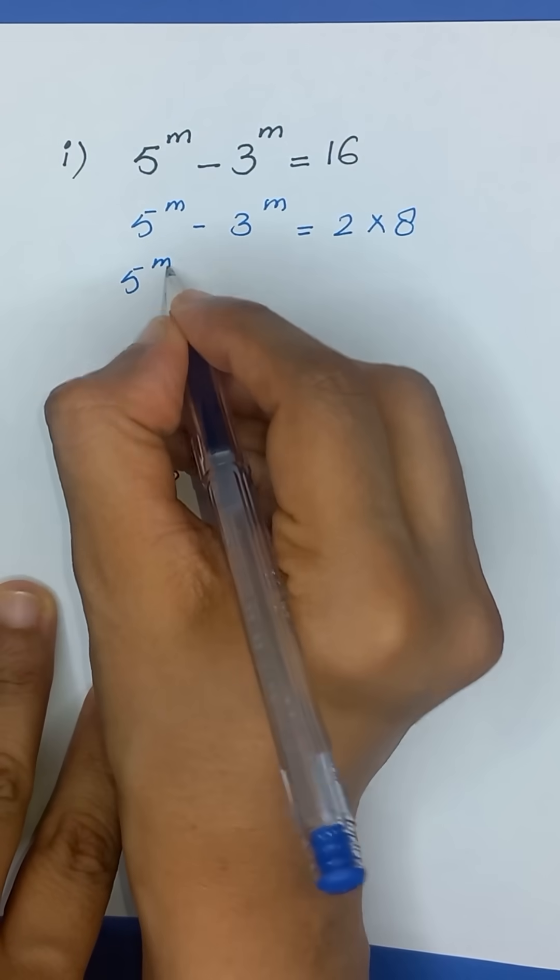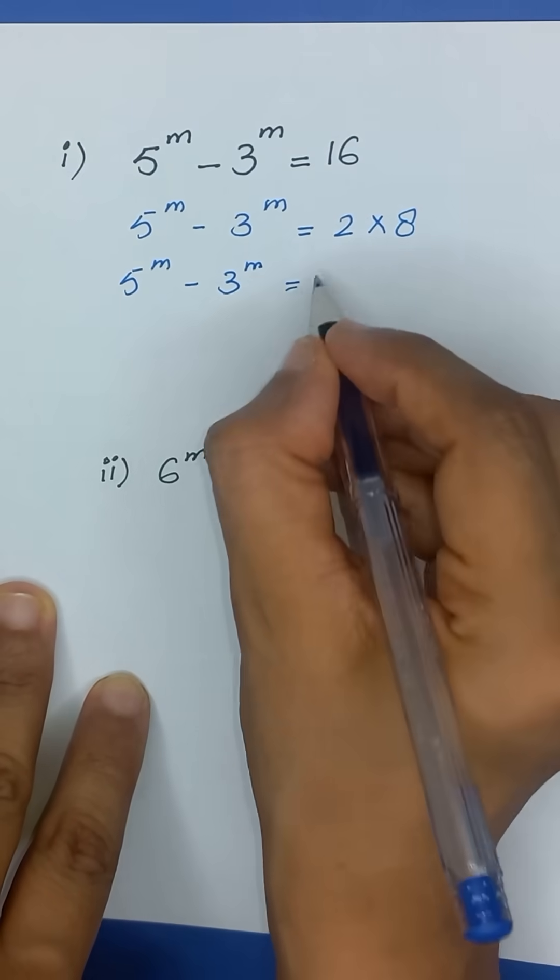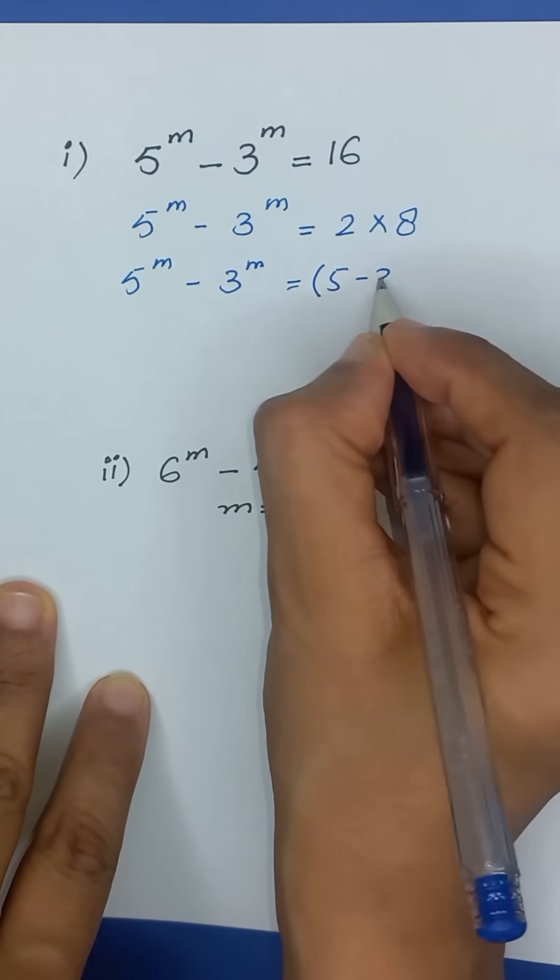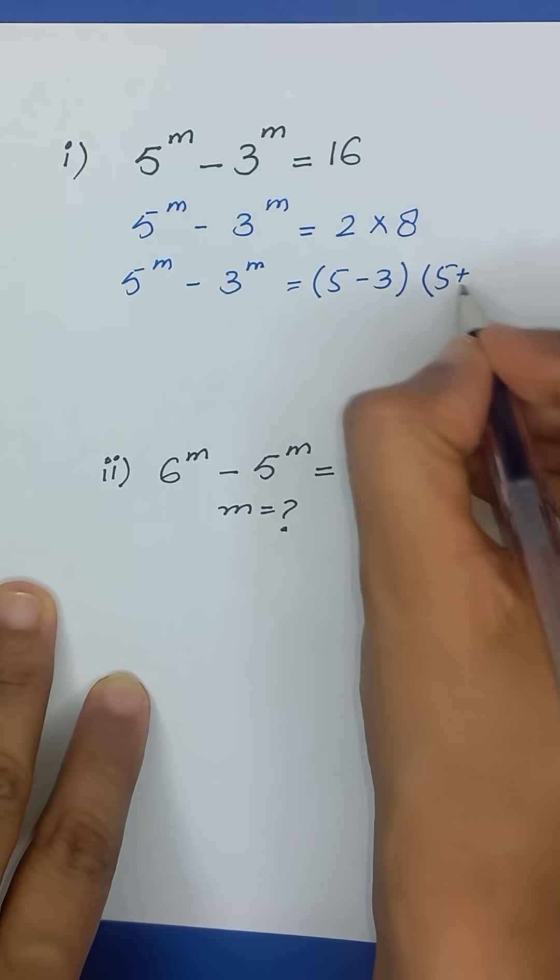Now 5 to the power m minus 3 to the power m, we can write this 2 as 5 minus 3 and this 8 as 5 plus 3.